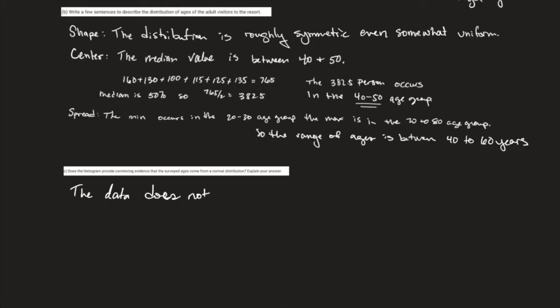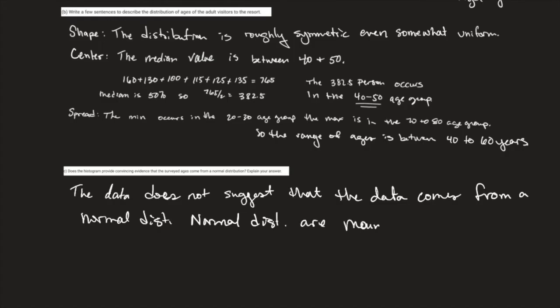Okay, part C. Does the data provide convincing evidence that surveyed ages come from a normal distribution? Explain your answer. I think the easiest one would be shape, and that's kind of what I focused on. The data does not suggest that the data comes from a normal distribution. We know that normal distributions are unimodal and bell-shaped or mound-shaped, and we know that this graph does not have that kind of shape. You could have gotten really detailed with this and you could have brought up the 68-95-99.7 rule and talked about how those percentages didn't work out, or you could talk about how towards the end of your values you had more data than you did in the middle, and we know that normal distributions have that peak in the middle where majority of your data falls.